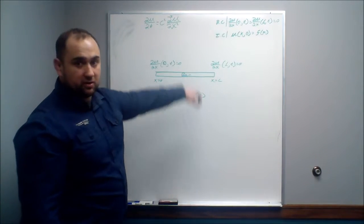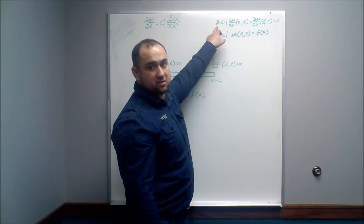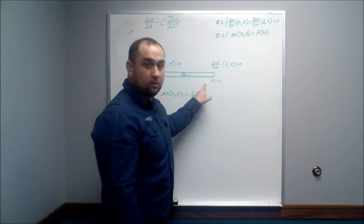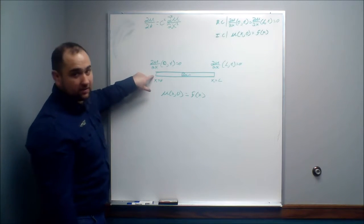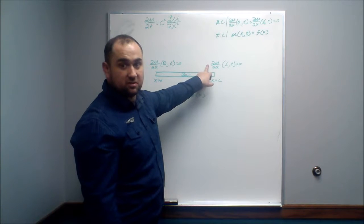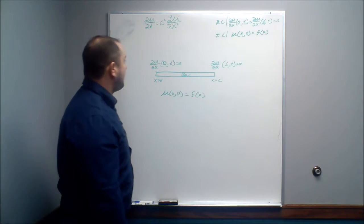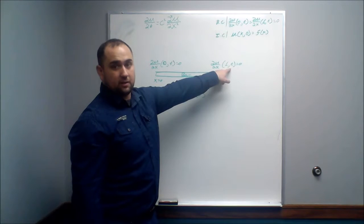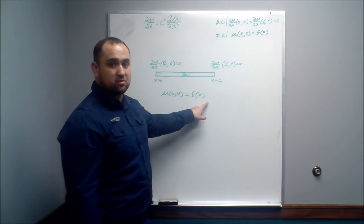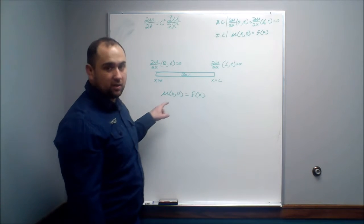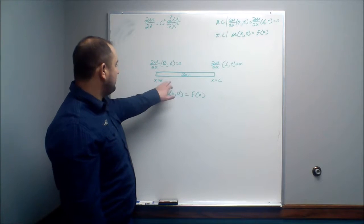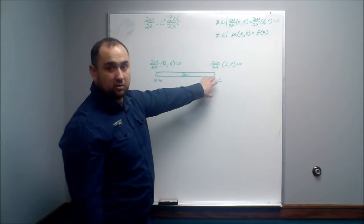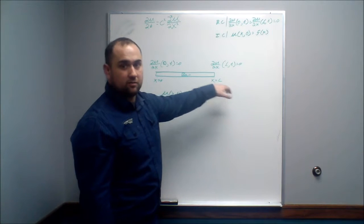We're going to take a look at solving the one-dimensional heat equation subject to these boundary conditions and this initial condition. This is a one-dimensional bar of length L, subject to this initial condition. Notice that the boundary conditions do not change with time. The initial condition tells us what the heat distribution throughout the bar is at time equal to zero. Initially we might have heated this bar up at one end and kept it cool at the other, and we want to model how the heat is going to flow or evolve over time.